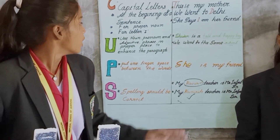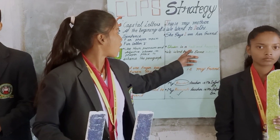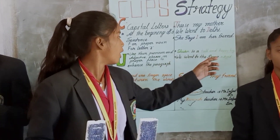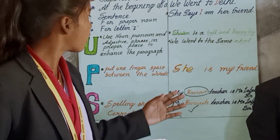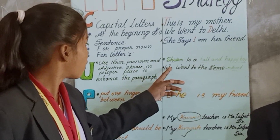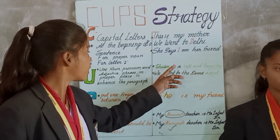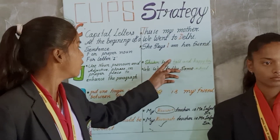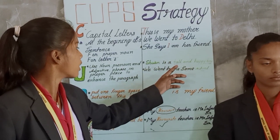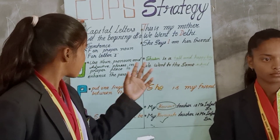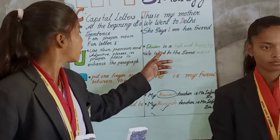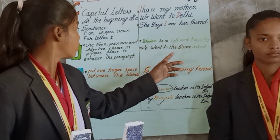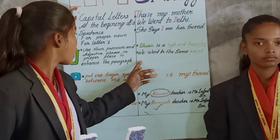For example, 'Sivam is a tall and happy boy.' In this sentence, Sivam is a noun, tall is an adjective, and happy boy is a noun phrase. As a second example, 'We went to the Sivam school.' Here, we is a pronoun, Sivam is an adjective, and school is a noun.